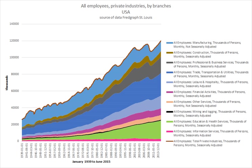Scholars conceptualize the employment relationship in various ways. A key assumption is the extent to which the employment relationship necessarily includes conflicts of interests between employers and employees, and the form of such conflicts. In economic theorizing, the labor market mediates all such conflicts such that employers and employees who enter into an employment relationship are assumed to find this arrangement in their own self-interest. In human resource management theorizing, employers and employees are assumed to have shared interests, or a unity of interests — hence the label unitarism. Any conflicts that exist are seen as a manifestation of poor human resource management policies or interpersonal clashes, both of which can and should be managed away.